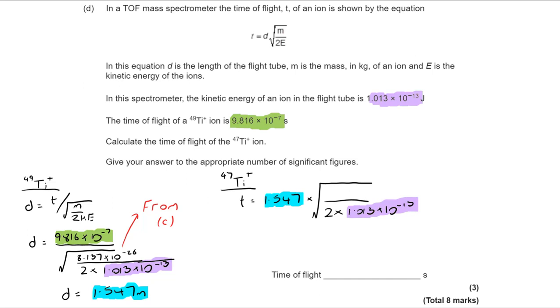So I can put in on the bottom line 2 multiplied by kinetic energy. All that's left is the mass. But I can work out the mass for the titanium 47. And if I show the working out there, you can see the value that then goes in. Once I've got all of that in place, I can work out the time. And it comes to 9.614 by 10 to the minus 7 seconds.